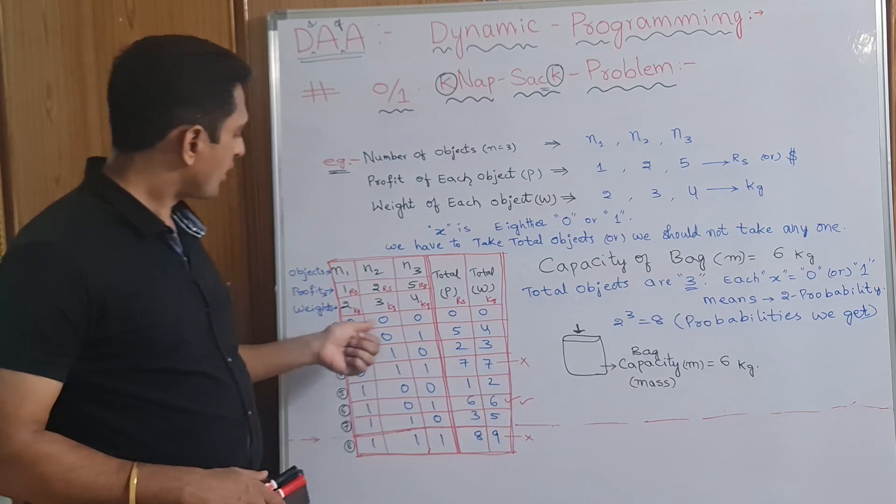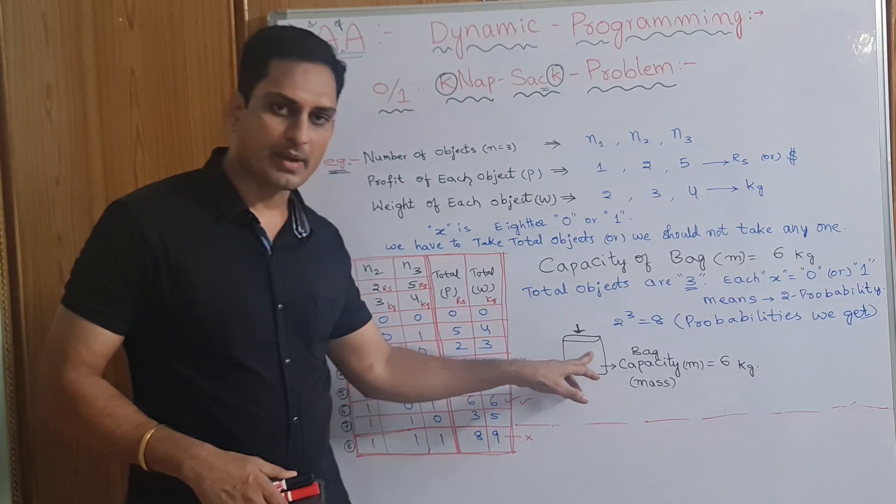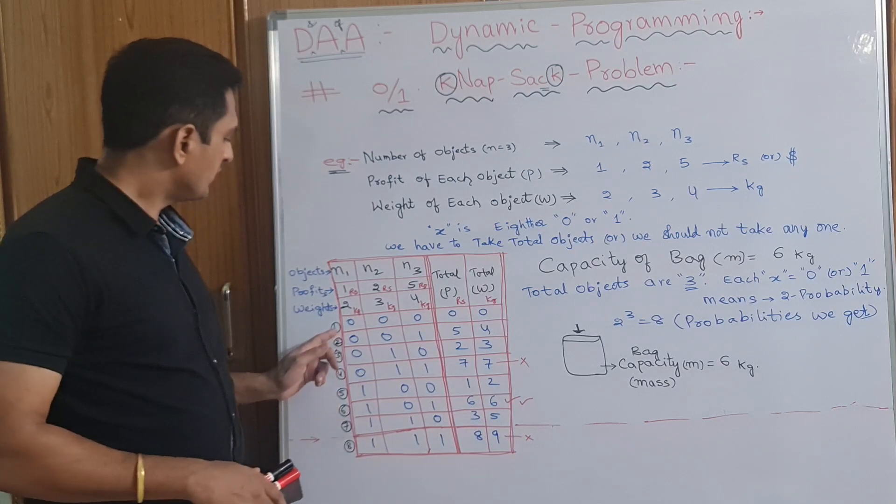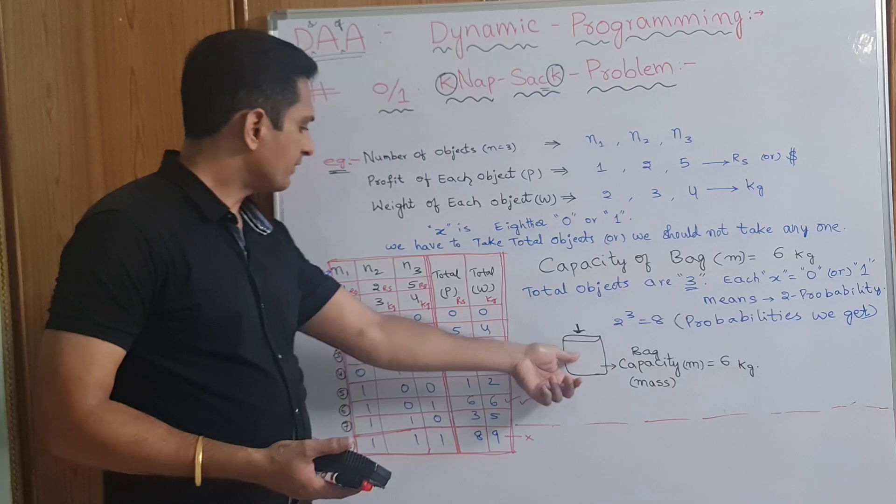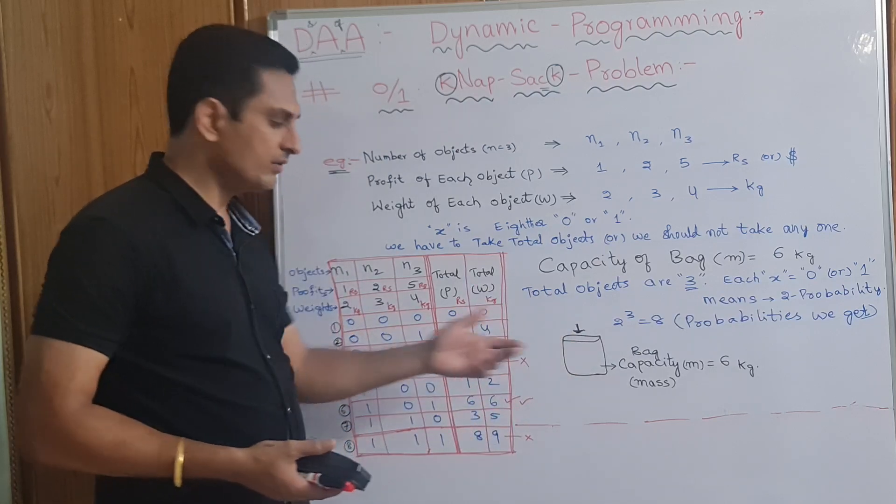Here, if you have not taken anything in the bag, total probabilities I have drawn. You have not taken any objects in this bag. So, obviously, the bag weight is 0 and the profit you will get 0.